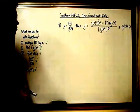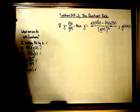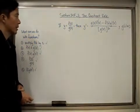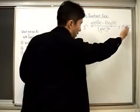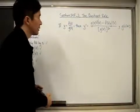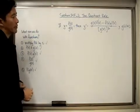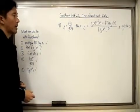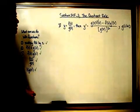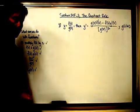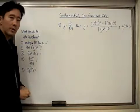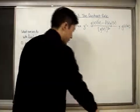So let's take a look at what the Quotient Rule says. It says that if you have y equal to f(x) over g(x) — assuming that g(x) is not equal to zero, otherwise this would be undefined — then dy/dx, or y prime, is going to be g(x) times f'(x) minus f(x) times g'(x), all over g(x) quantity squared.